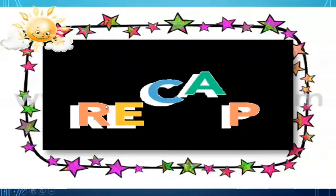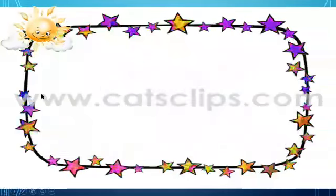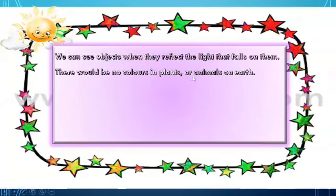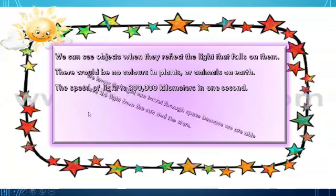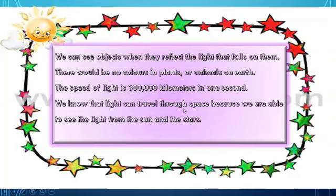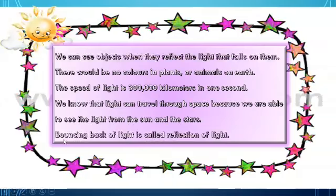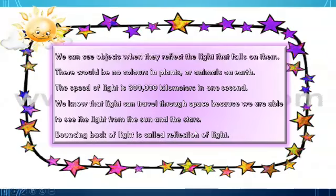Now it's recap time. What we read today: we can see objects when they reflect the light that falls on them. There would be no colors, plants, or animals on earth without light. The speed of light is 300,000 kilometers in one second. We know light can travel through space because we can see the light from the sun and the stars. The bouncing back of light is called reflection of light.